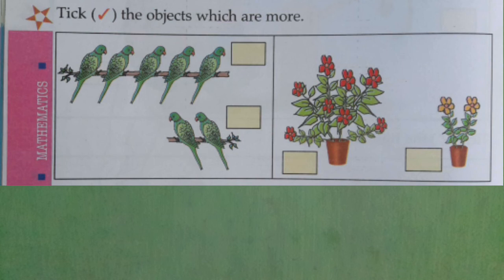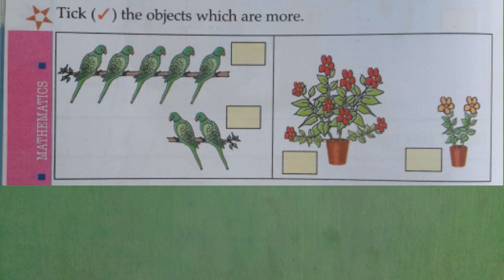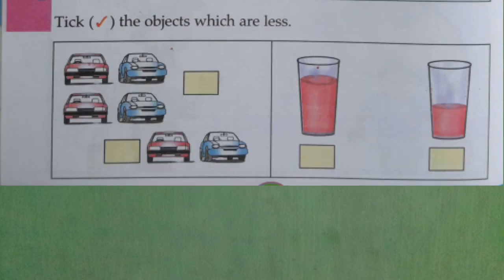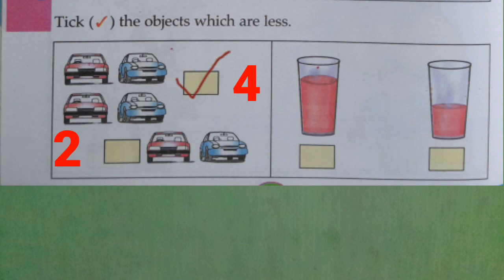You see the flower buckets. In one flower bucket there are eight flowers, and in another there are two flowers. Eight is more and two is less. You have to tick the left side flower bucket because there are more flowers. See the next picture — there are four cars on the top and two cars below. Which is more? Four is more than two; two is less. So you take the tick where there are four cars.